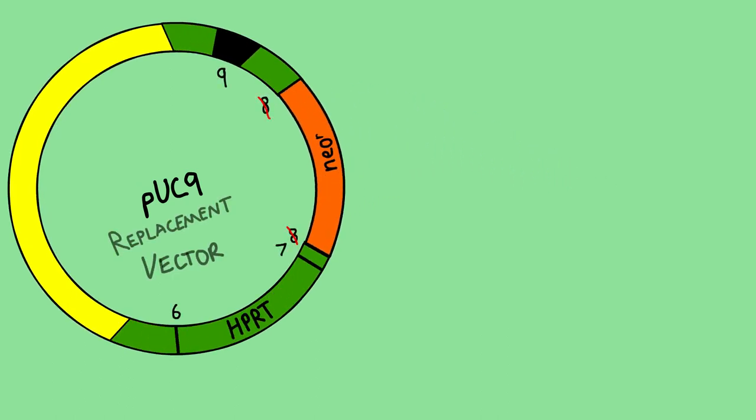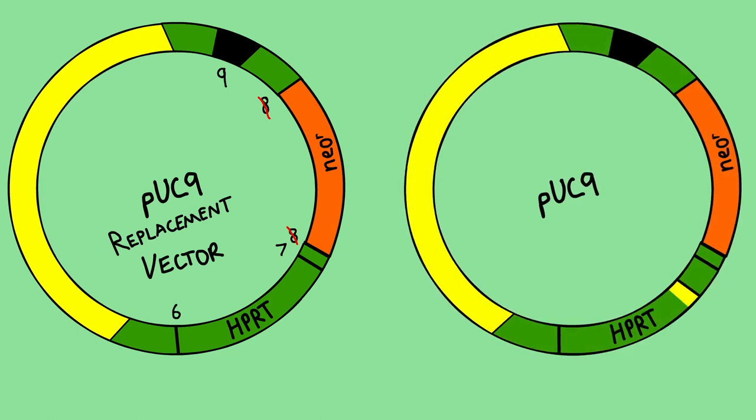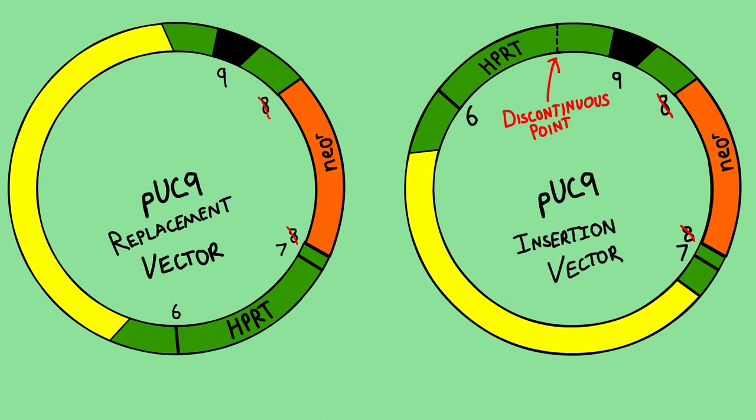To construct the insertion vector, the homologous portions were arranged in such a way that on recombination the exon order was maintained, and a portion of the HPRT gene was duplicated.